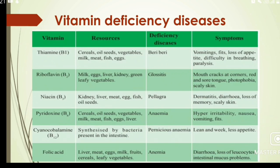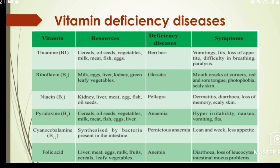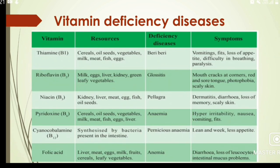Vitamin B3 is Niacin. Rich food sources include kidney, liver, meat, eggs, fish, and oil seeds. The deficiency disease is Pellagra. Symptoms are dermatitis, diarrhea, loss of memory, and scaly skin.